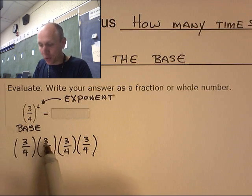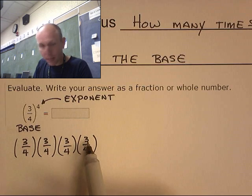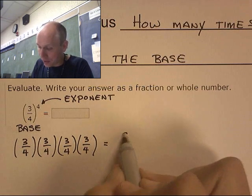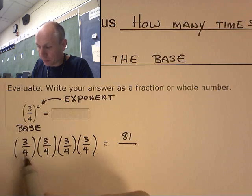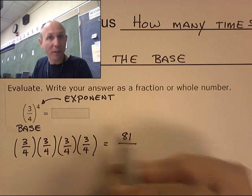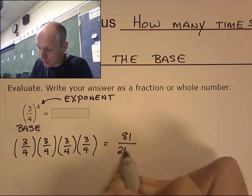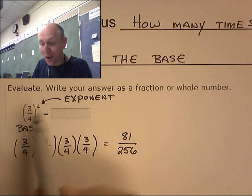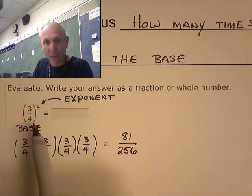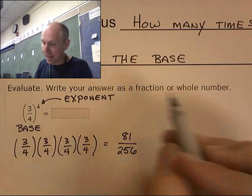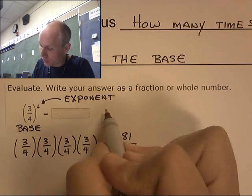So I have three-fourths times three-fourths times three-fourths times three-fourths. Well, look at this. This is three times three times three times three. It's just three to the fourth, which is 81. This is four times four times four times four. Well, that's 256.